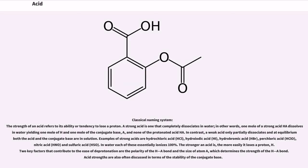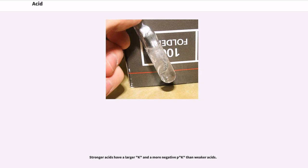The stronger an acid is, the more easily it loses a proton (H+). Two key factors that contribute to the ease of deprotonation are the polarity of the H-A bond and the size of atom A, which determines the strength of the H-A bond. Acid strengths are also often discussed in terms of the stability of the conjugate base. Stronger acids have a larger Ka and a more negative pKa than weaker acids.